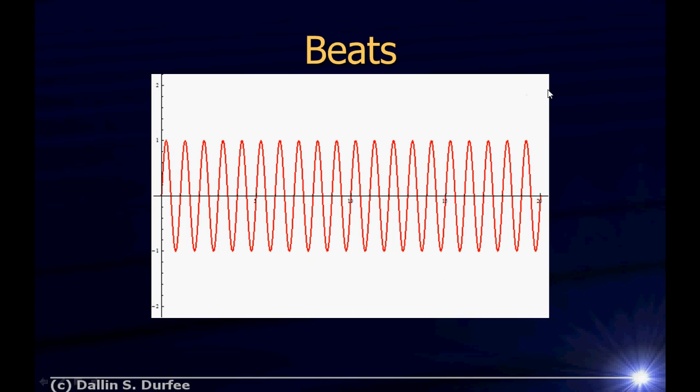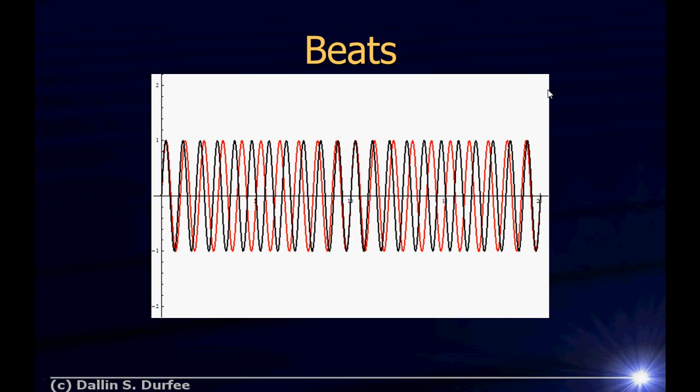I'm going to plot that now. So red is the wave from speaker number one, and black now is the wave from speaker number two. You see that they are oscillating, they're both oscillating sinusoidally. Initially you see the speakers are both oscillating together—they're in phase with each other.